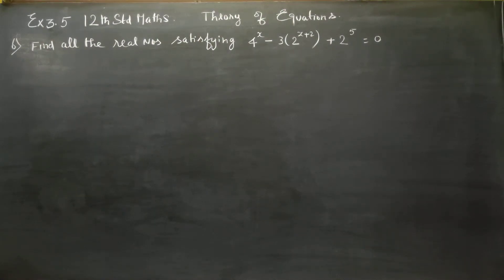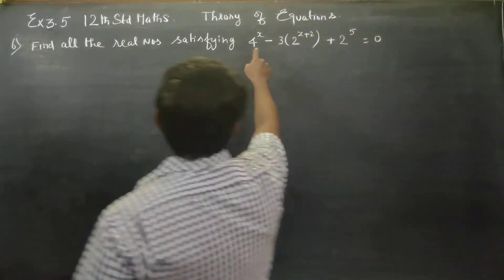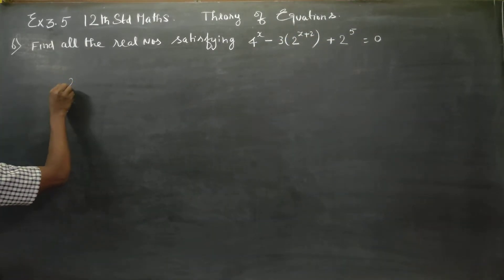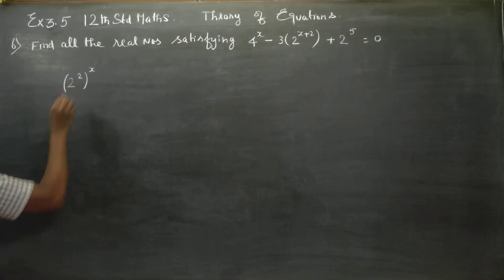Hello to all standard students. In exercise number 3.5, problem number 6, first I will start simplifying this. 4^x can be written as (2^2)^x.